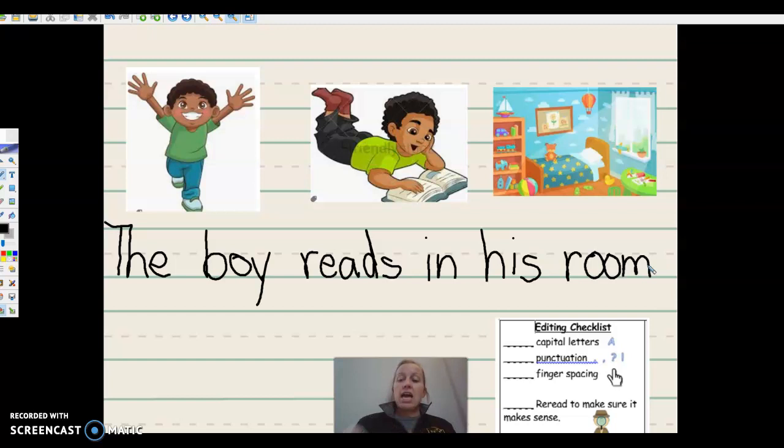Now, I have an editing checklist here at the bottom where I can check my work. First thing it wants me to look for is to make sure I have capital letters at the beginning of the sentence. If I look at the beginning of my sentence, I have a capital T. Do you? Good job. And if I look through the rest of the sentence, I don't have any other capital letters. So I can check that off of my list. I'm good to go.